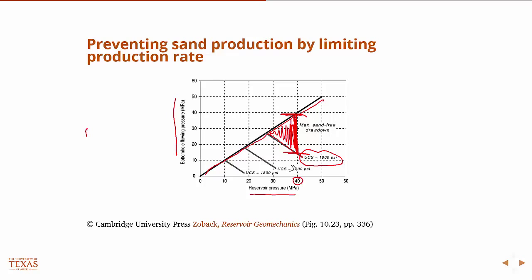As we produce the reservoir, the reservoir pressure is going to drop. As we drop the pressure in the reservoir due to depletion, our window shrinks in terms of how much we can draw down without producing sand. Even if you just go from 40 to 30 MPa, the drawdown — the ability to produce oil and gas without producing a lot of sand — goes down from about 25 MPa to 6 MPa.